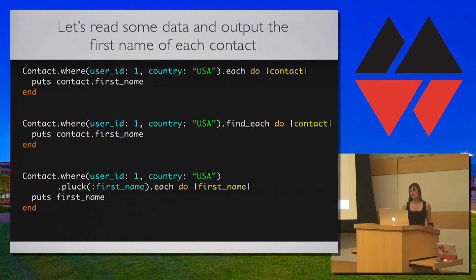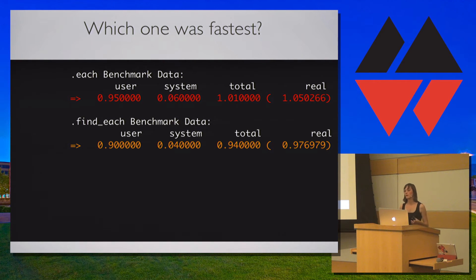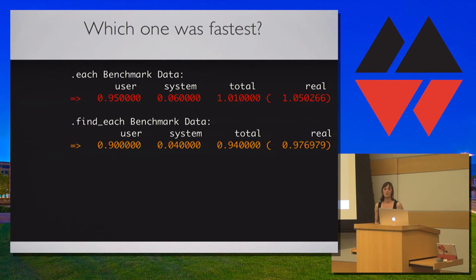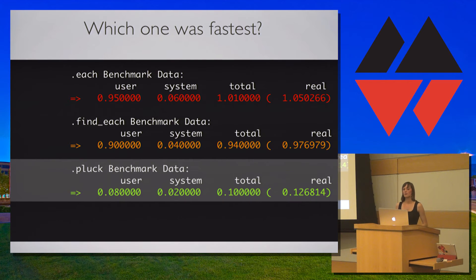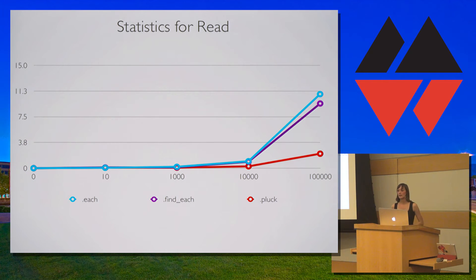So which of these queries is fastest? At 10,000 records, each benchmarks at one second and find_each is not much faster — but with collecting records we are more concerned with memory than time. 10,000 records won't strain memory much, but 100,000 records will have much more of an impact. With pluck, we can see significant time saved — it's much faster than each or find_each since we only need the first name. When the data set increases to 100,000 records, the savings are more obvious.